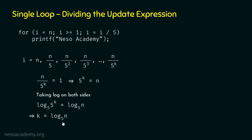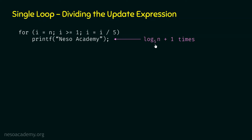So k is log N base 5, and this statement will run k plus 1 times — that is, log N base 5 plus 1 times. This equals Theta of log N. This time complexity is the same as for the single loop where in the update expression we multiply the variable by a constant. One thing to note: the constant is 5 in the update expression, and that's why the base of the logarithm is also 5. Whatever constant we have in the update expression, we get it as the base of the logarithm — that's a useful trick to remember.